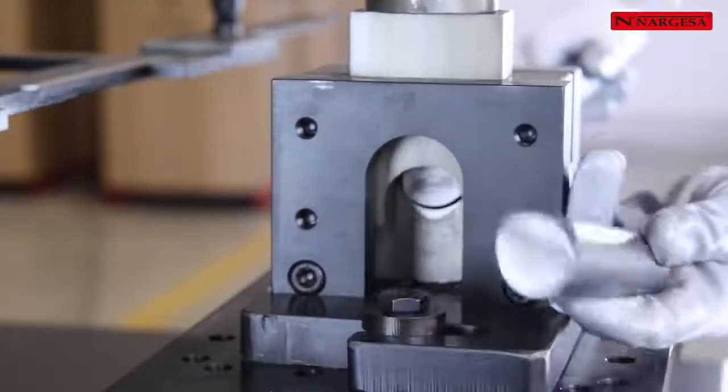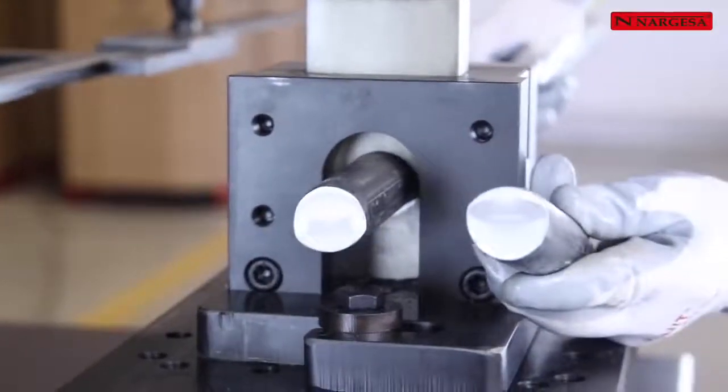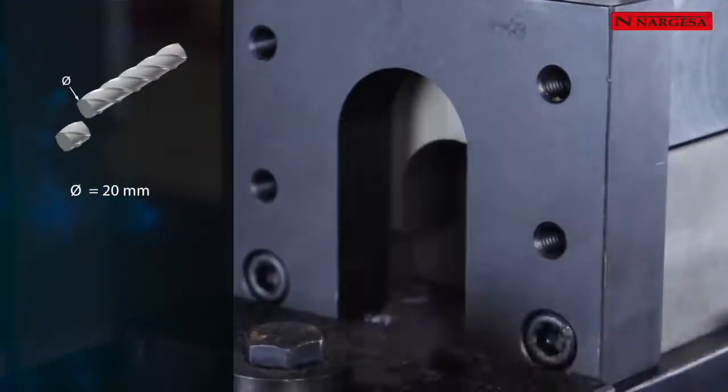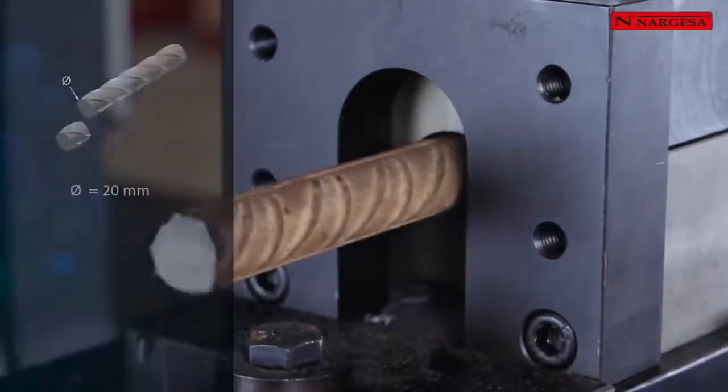The round bar die can cut mild steel, stainless steel, rods, and other materials up to 35 millimeters in diameter.